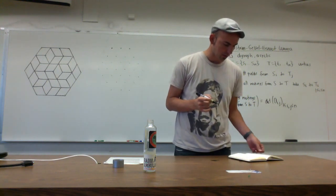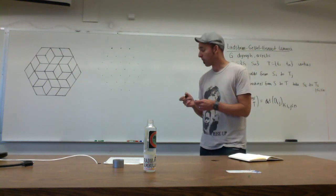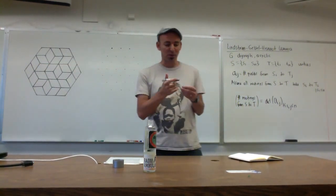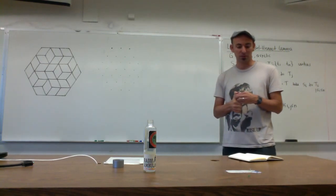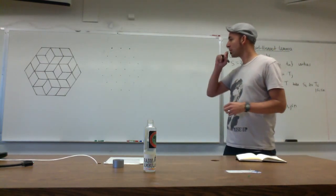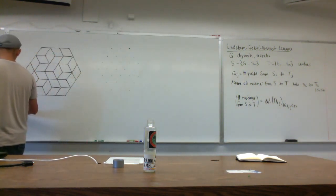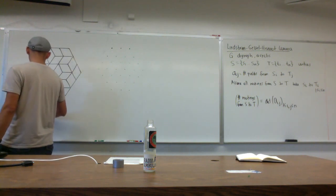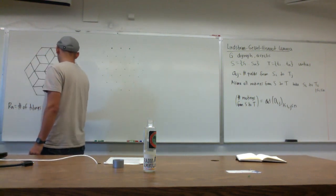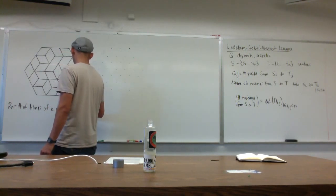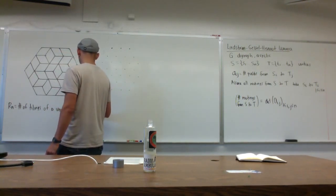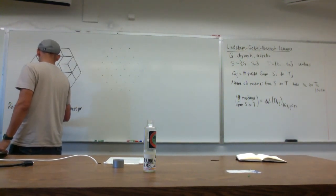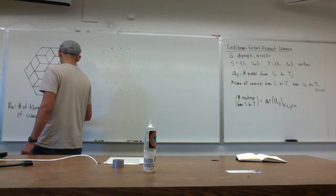We were doing some applications of this, and I want to keep doing that today. So today is like 'fun with determinants part two.' I want to start by considering the problem of counting the number of tilings of a regular hexagon of side length n with unit rhombi.